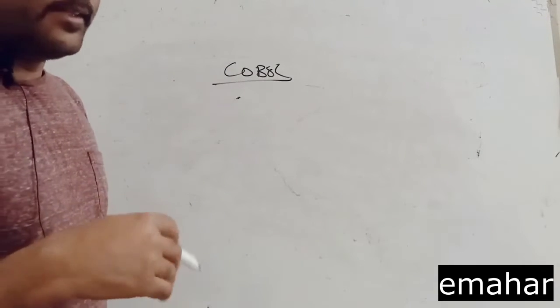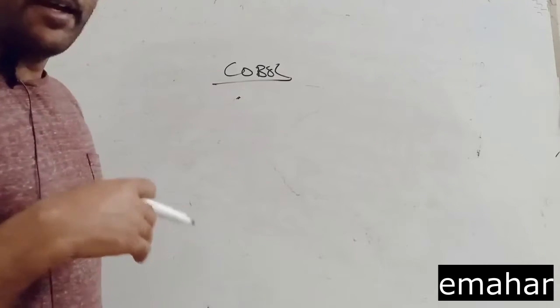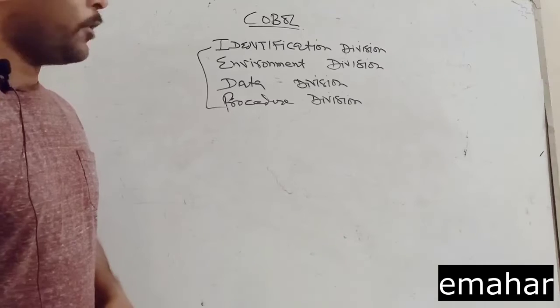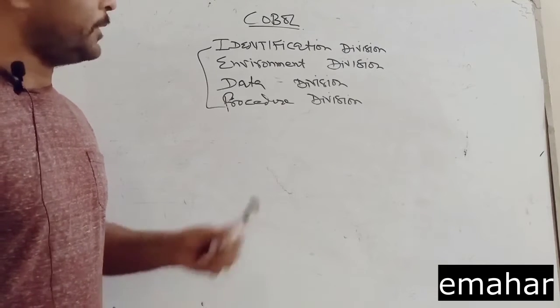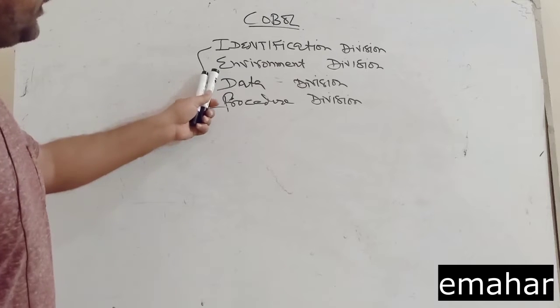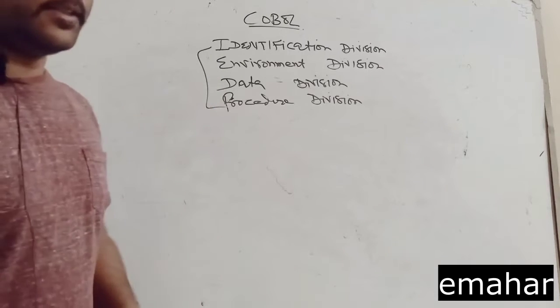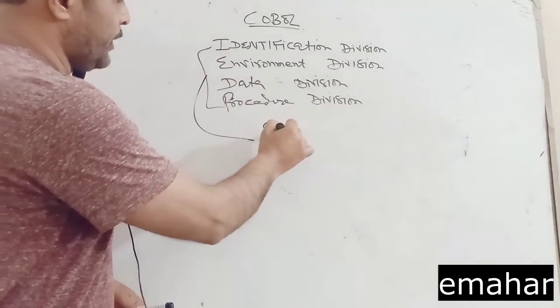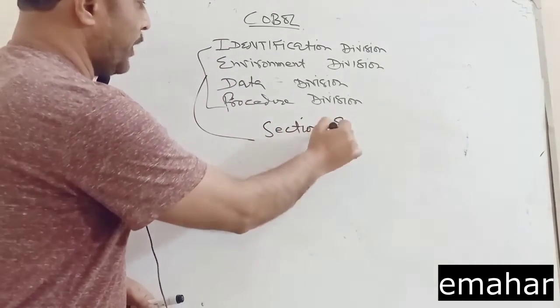COBOL programs can be written in any text editor or in any IDE which supports COBOL. COBOL program structure consists of divisions: identification division, environment, data, and procedure divisions. Divisions consist of sections and paragraphs.